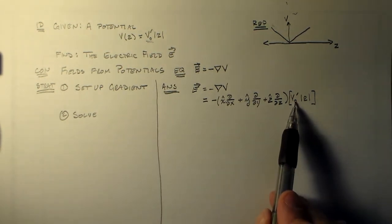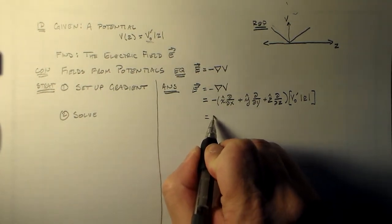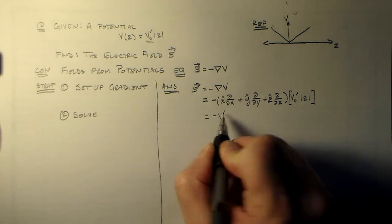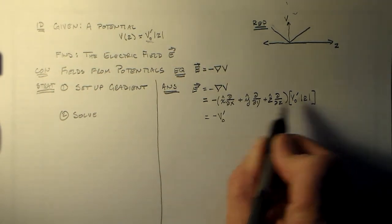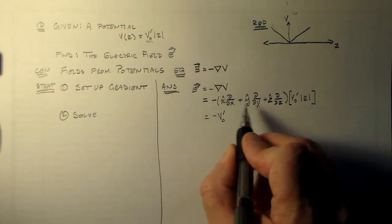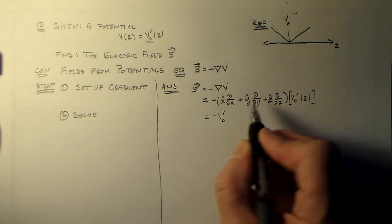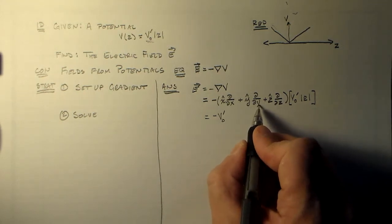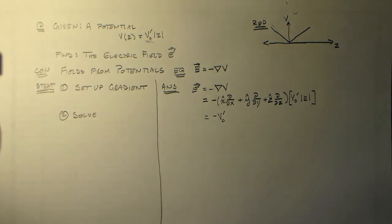So we've got that and then we've got this guy over here, which is V naught prime times the absolute value of Z. So V naught prime is independent of everything else, right? So when we're going to solve it, we just pull that out here. So we have minus V naught prime. Z is independent of X, so that derivative is zero, so there's no X component. It's also independent of Y, so there's no Y derivative. Remember, for a partial derivative, all that matters is explicit dependence.